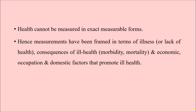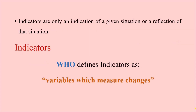By these methods we can indirectly quantify health. Now, what is an indicator? Indicators are variables which measure changes — this definition is given by WHO. They indicate any given situation or a reflection of that situation, such as the health status of a person or group of people in a community at any particular moment. An indicator is also a direct or indirect reflection of the situation.